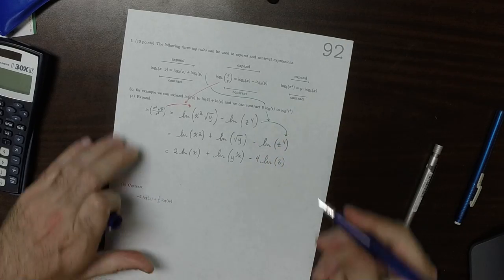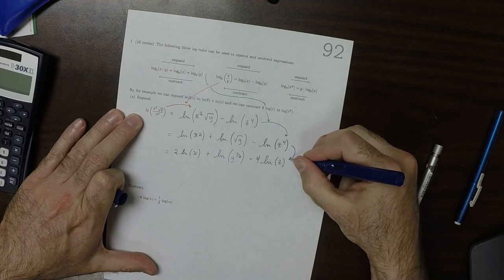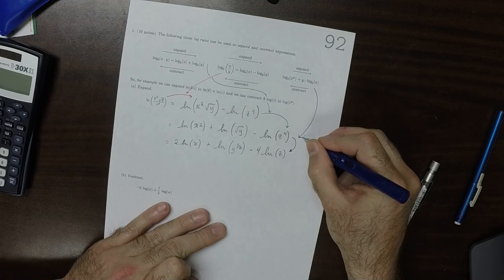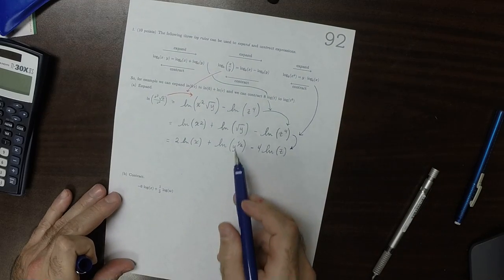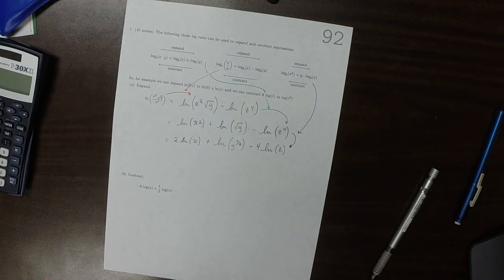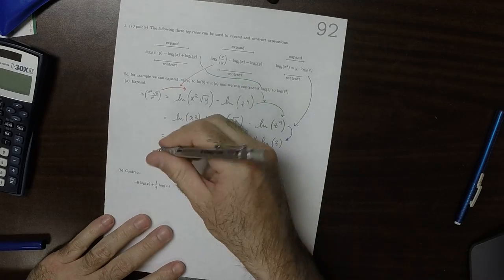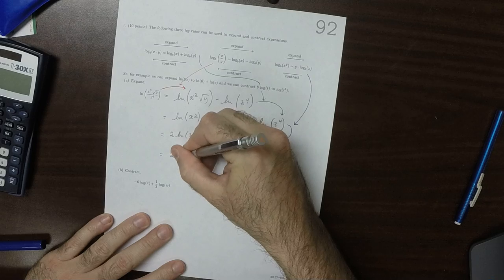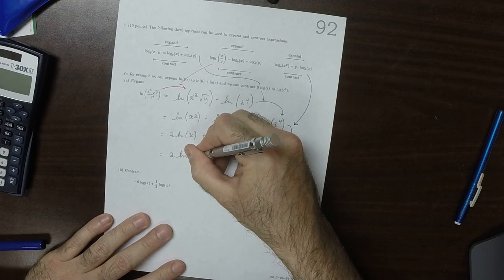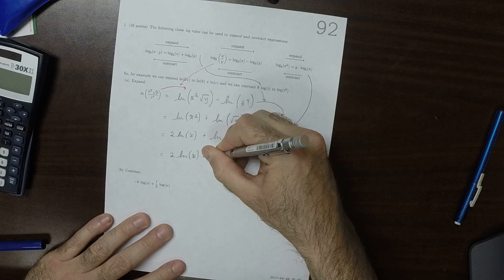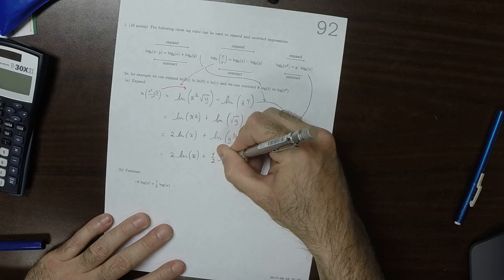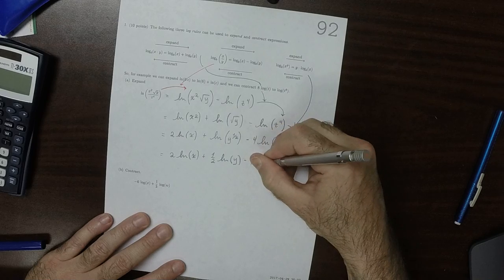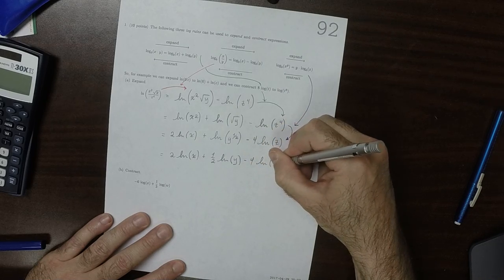So this move was from that rule. And then I expressed the square root as fractional exponent half. So then the half can come out, log of y, and then minus 4 log z.